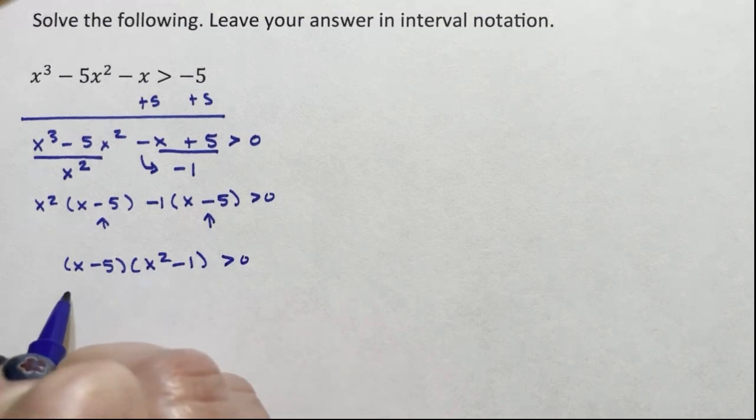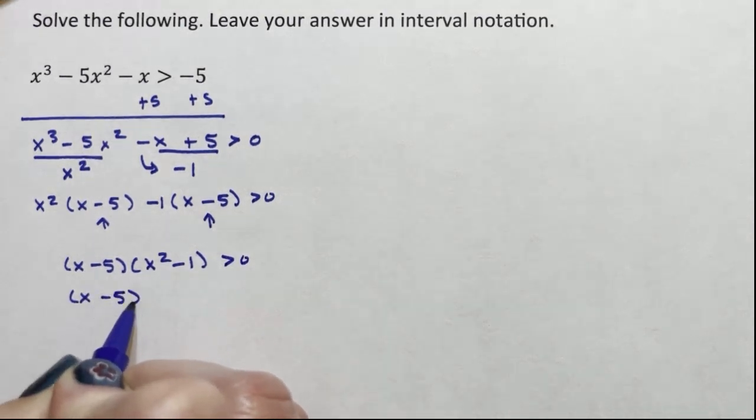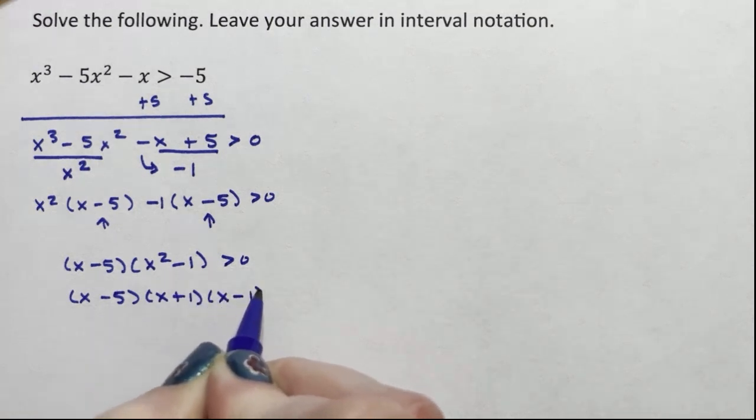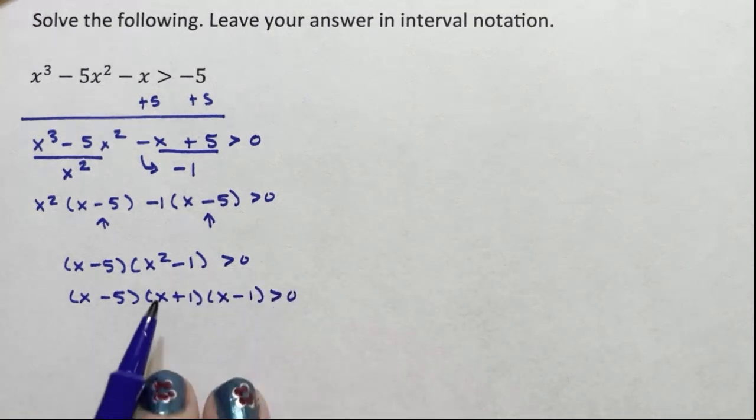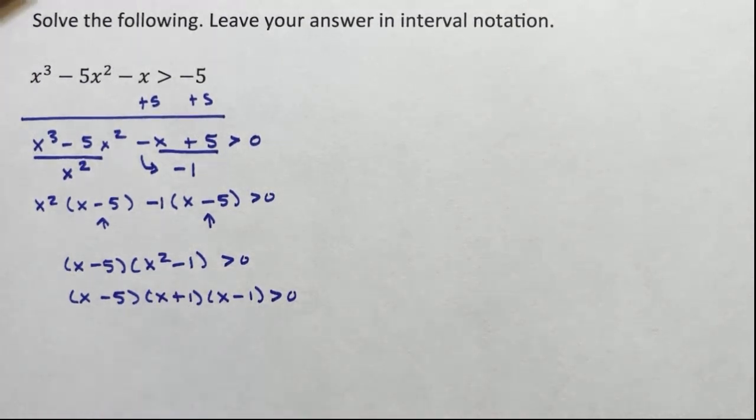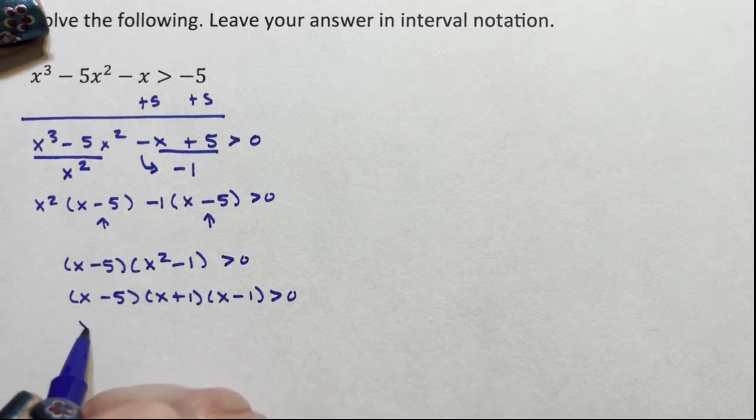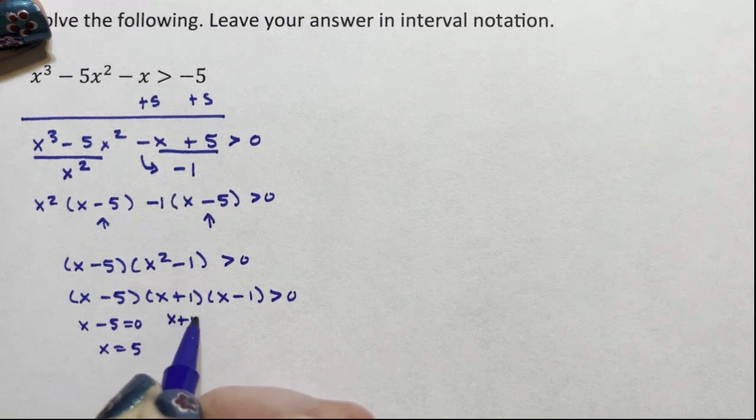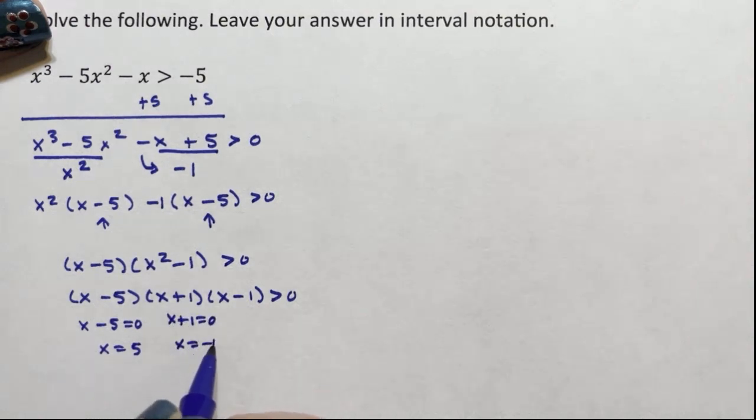This is the difference of two squares. So I'm going to have x minus 5, x plus 1, and x minus 1. The reason the difference of two squares work is because we're looking for two numbers that multiply to negative 1 and add up to 0, which is plus 1 and minus 1. x minus 5 is 0 when x is 5. x plus 1 is 0 when x is negative 1. x minus 1 is 0 when x is positive 1.